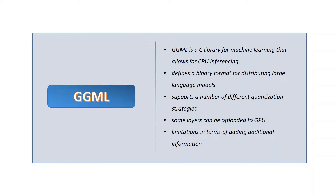GGML supports a number of different quantization strategies, such as 4-bit, 5-bit, and 8-bit quantization, each of which offers different trade-offs between efficiency and performance. Though GGML models are optimized to run on CPUs, with recent advancements, some layers can also be offloaded onto GPU, which made them accessible to a wider range of users.